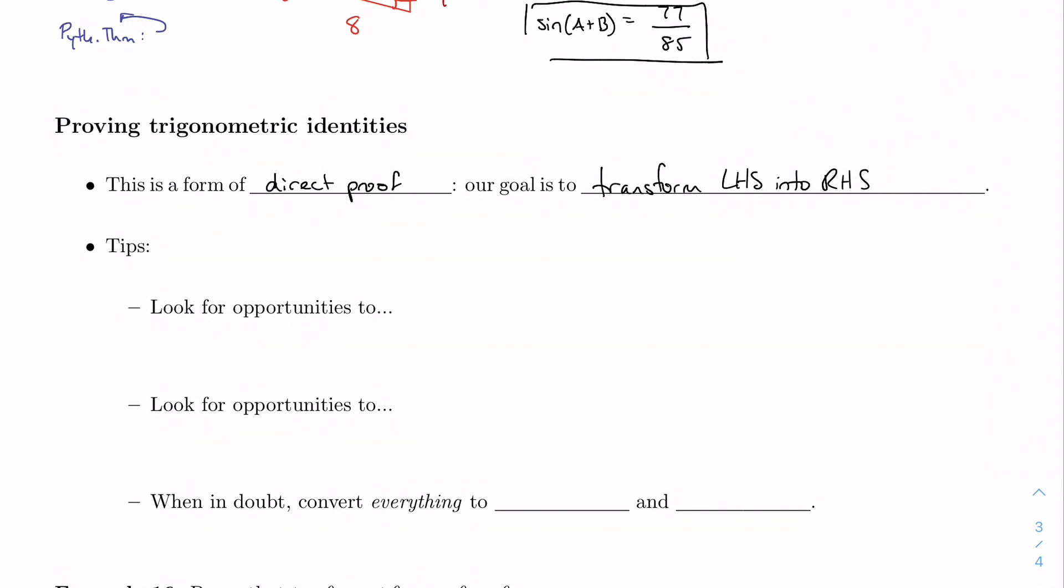So some tips. When you're dealing with proof with trig functions, we should look for a couple opportunities. One of those opportunities is to factor. Or to add fractions. Those are two key things that you may want to try to do in these kinds of proofs. We also want to use our identities. We learned all of these identities for a reason. We should use them.